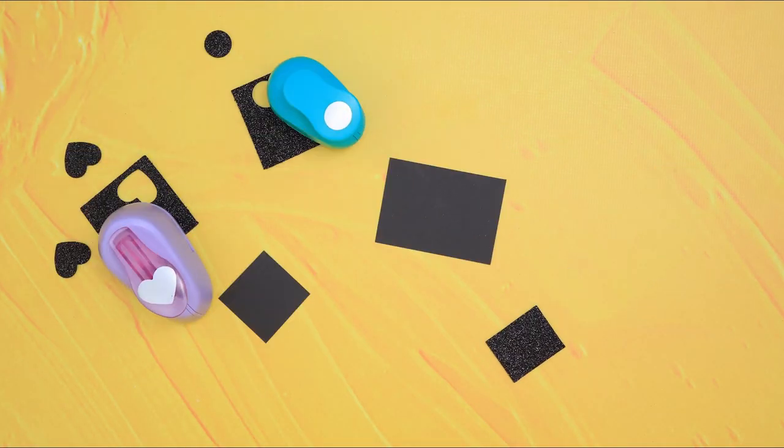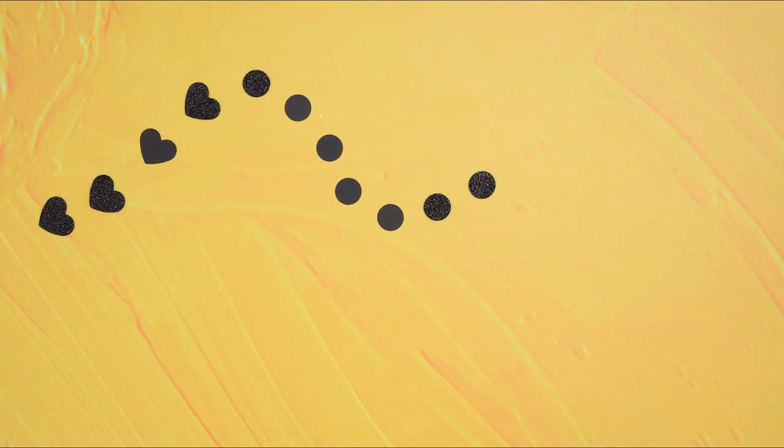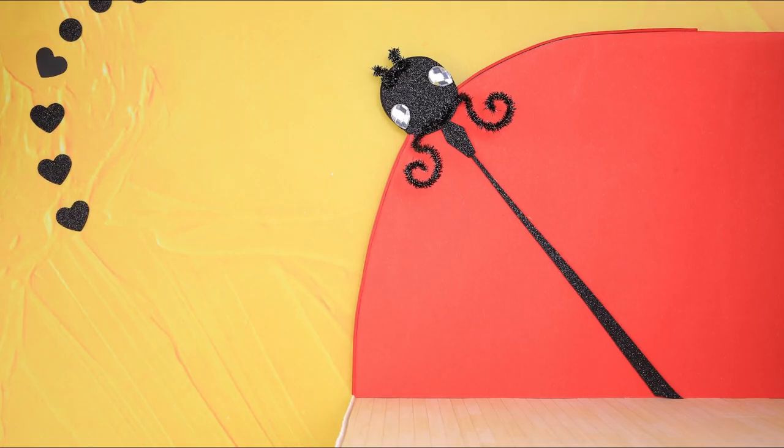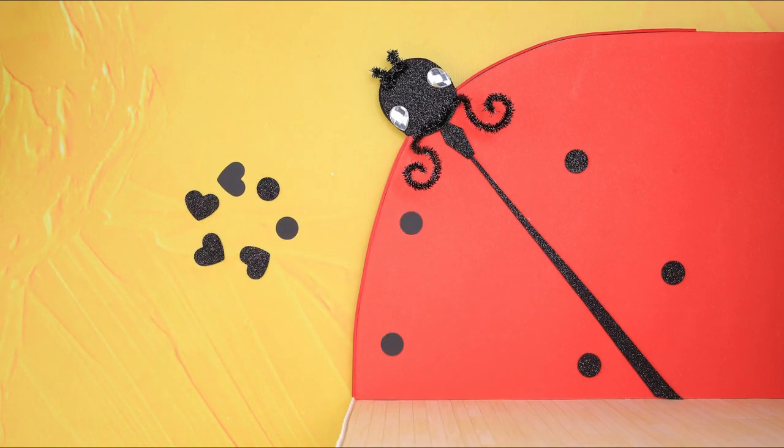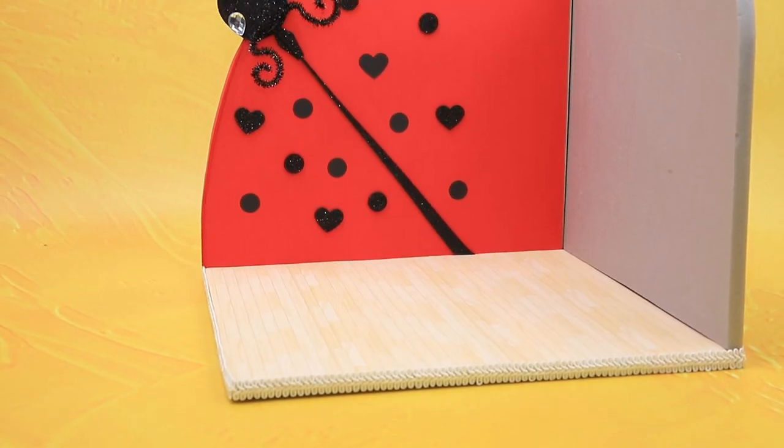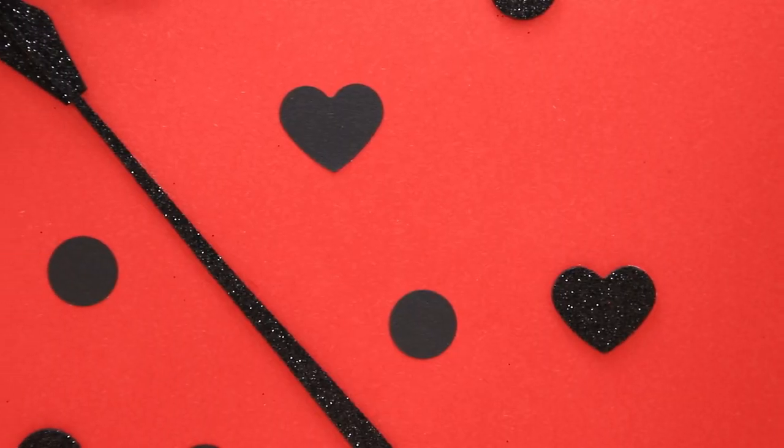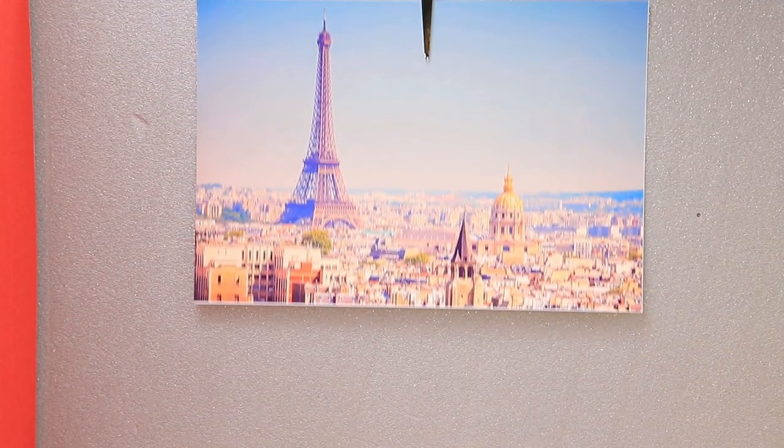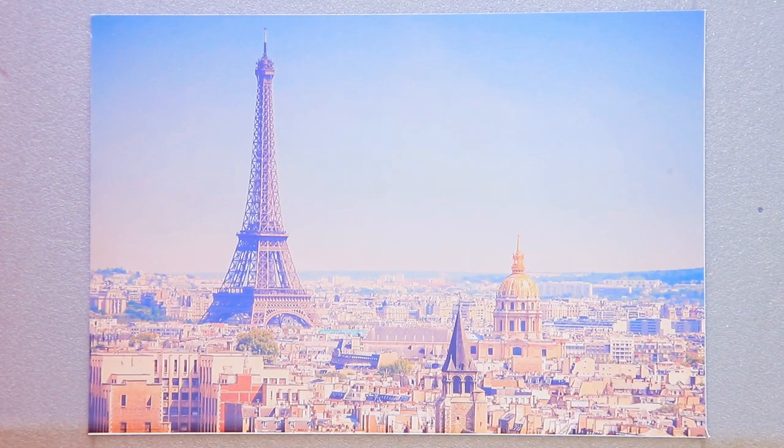Hole punches create hearts and spots. Snap! Spots are right on the wings. You can see Paris out of the window!